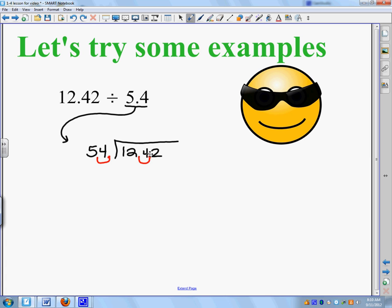Now, the cool thing here is now I know exactly where to put my decimal point, because you just follow it straight up. All right. So, now I'm going to do 54 into 124. I can't do it into 12, so I kind of just skipped that. And I'm going to do 54 into 124, which is twice.